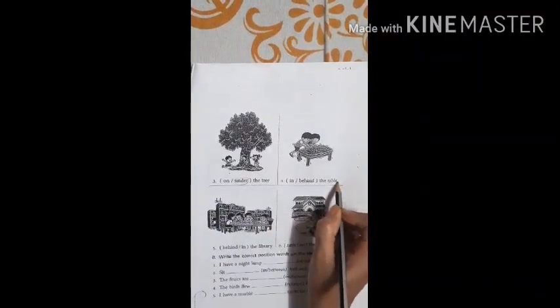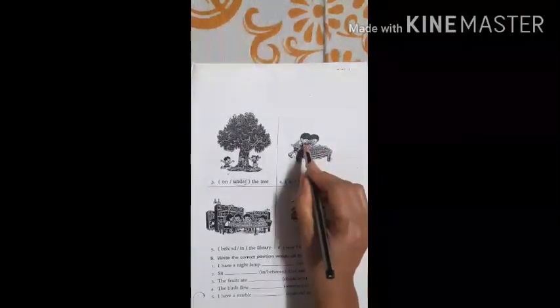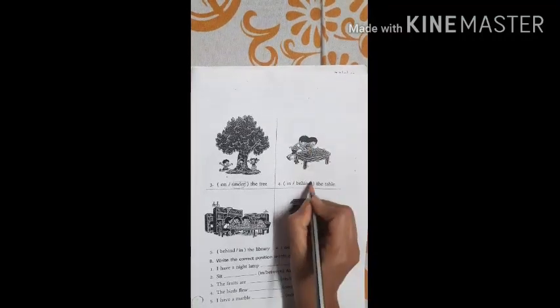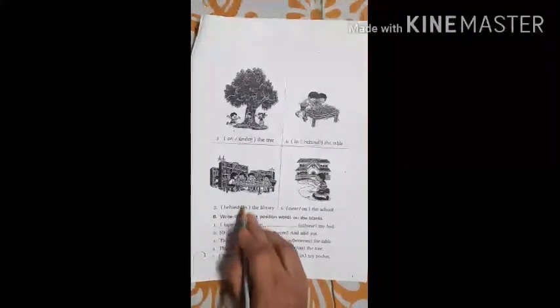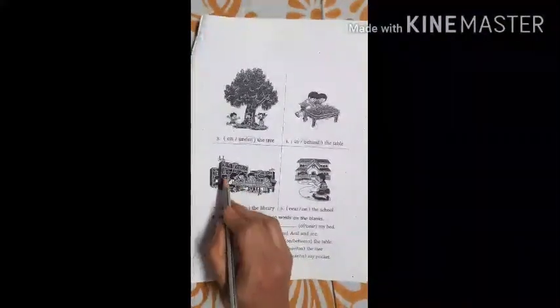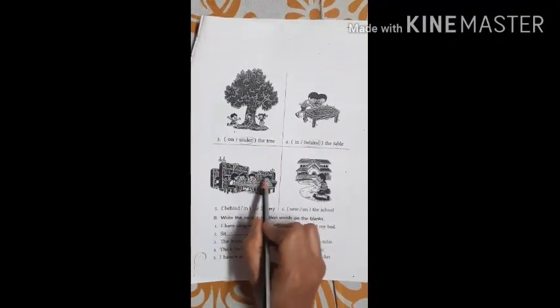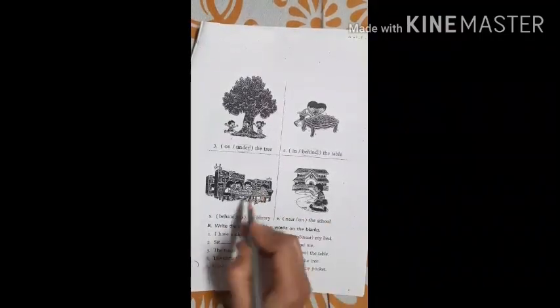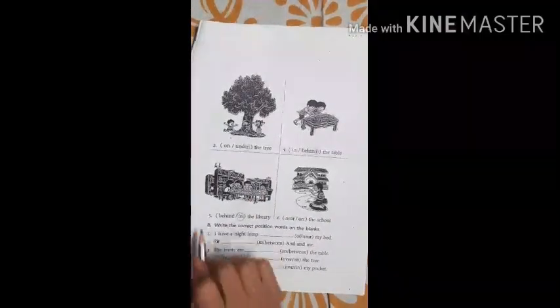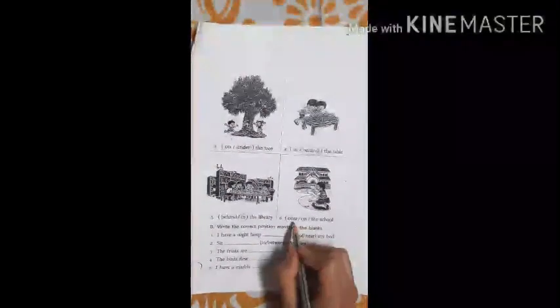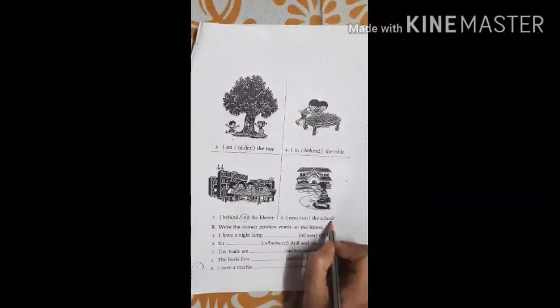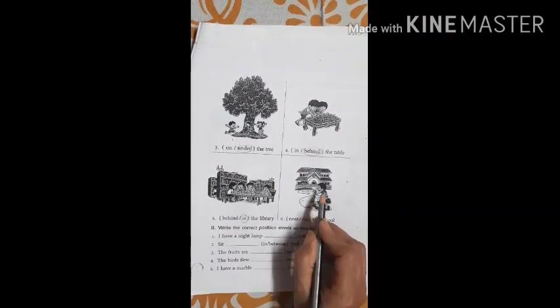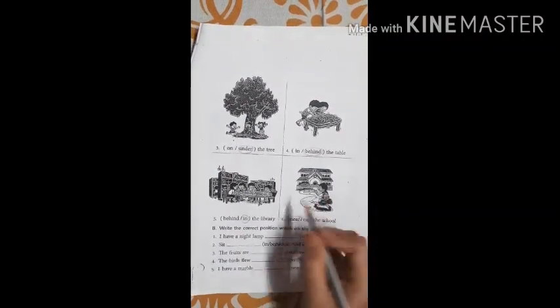In or behind the table — the children are behind the table. Next is behind or in the library. You can see there are some cupboards and the children are reading something, so they are in the library, not behind. Next is near or on the school — the girl is near the school, not on the school.